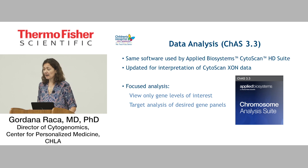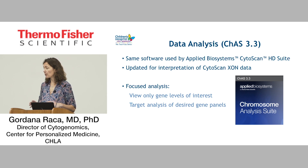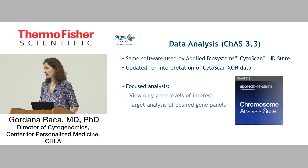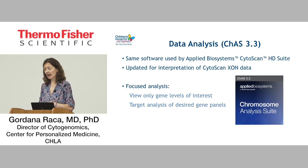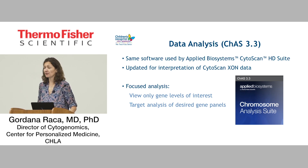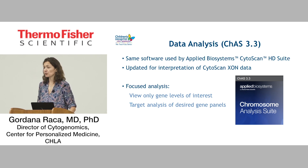What we also really liked about this platform is that it is very easy to add as an additional platform and incorporate into our current workflow, since we already use CytoscanHD and other Thermo Fisher platforms. It does not require any additional equipment or additional analysis tools — you can use ChAS for analysis. We also like that it allows focused analysis on just the genes you are interested in. You can select only the genes in your focused exome assay, or you can select to only look at tier 1 genes, so you do not have to worry about incidental findings if you don't want to deal with them.